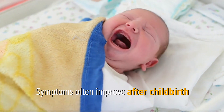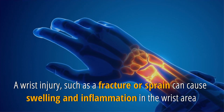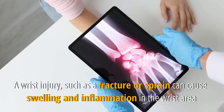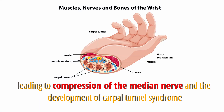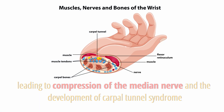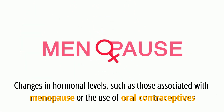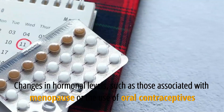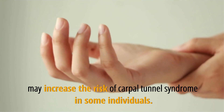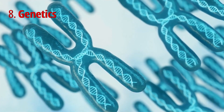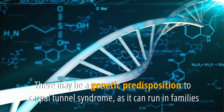A wrist injury, such as a fracture or sprain, can cause swelling and inflammation in the wrist area, leading to compression of the median nerve. Changes in hormonal levels, such as those associated with menopause or the use of oral contraceptives, may also increase risk. There may be a genetic predisposition to carpal tunnel syndrome, as it can run in families.